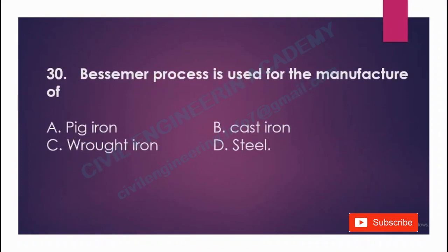The Bessemer process is used for the manufacture of: A) pig iron, B) cast iron, C) wrought iron, D) steel. The answer is option D, steel.